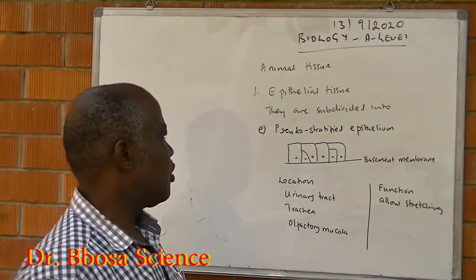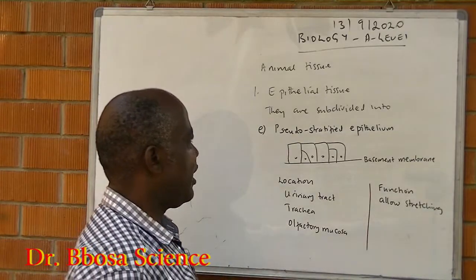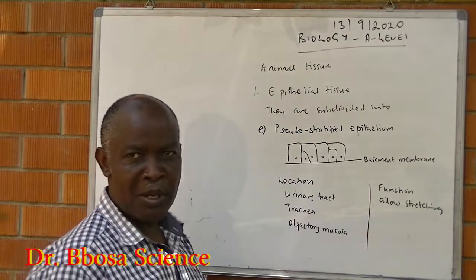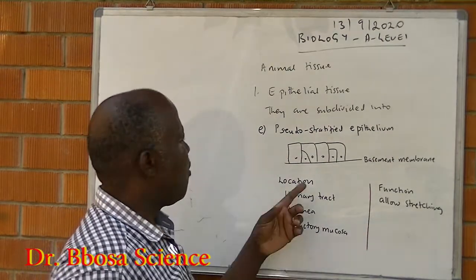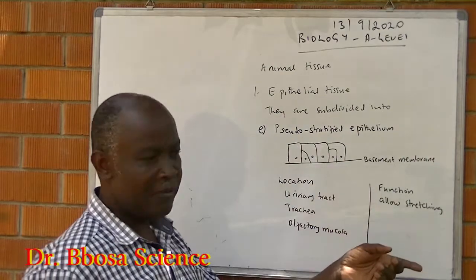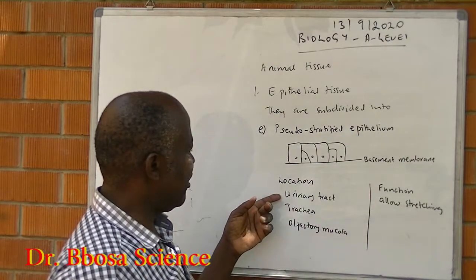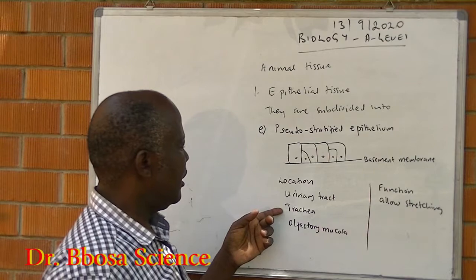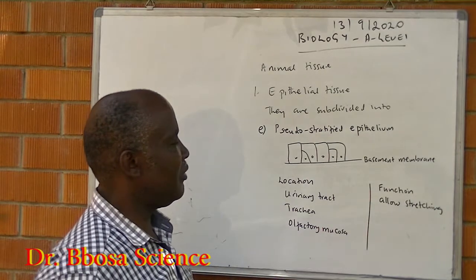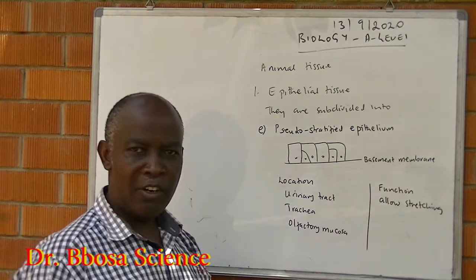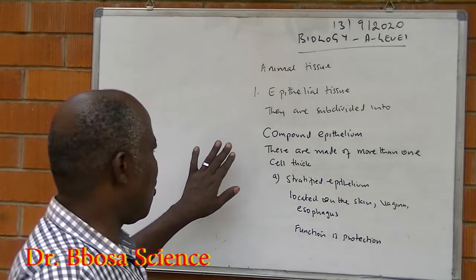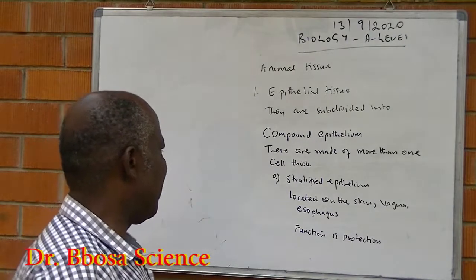Pseudostratified epithelium: all the cells are on the basement membrane, but not all the cells reach the surface. They are located in the inner tract, trachea, or olfactory mucosa. Their function is to allow stretching.